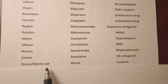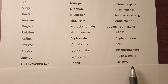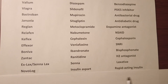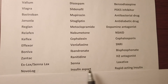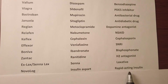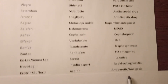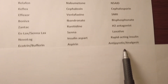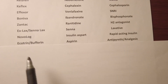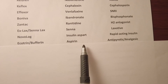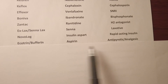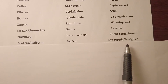Ex-Lax or Senokot, generic name senna, is a laxative. Novolog, generic name insulin aspart, is a rapid-acting insulin. Ecotrin or Bufferin is aspirin, an antipyretic or analgesic.